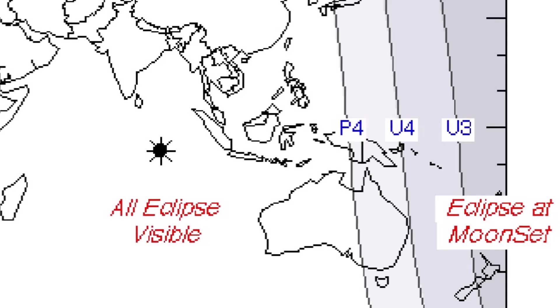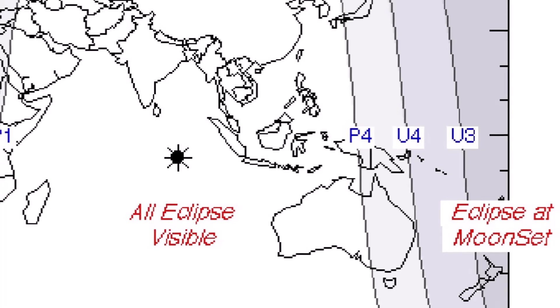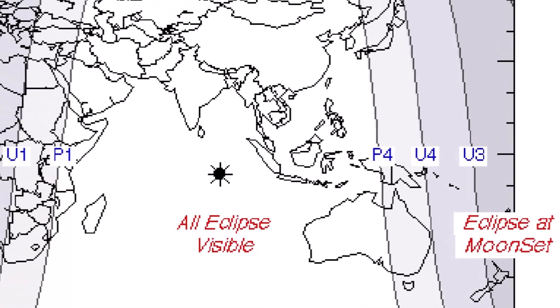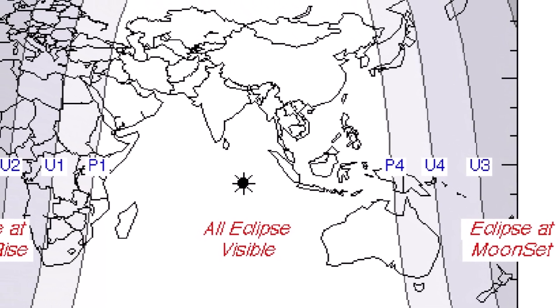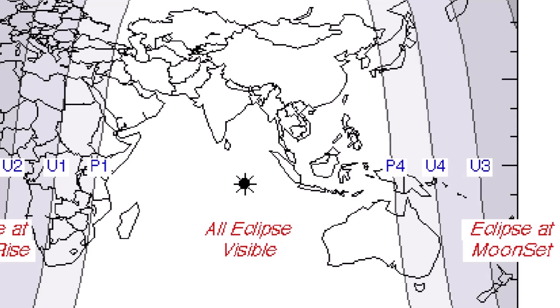So the most dramatic nightscape photos with the lunar eclipse and the landscape are probably most likely going to come from Eastern Africa, Australia, or Japan.